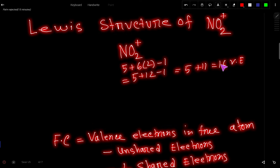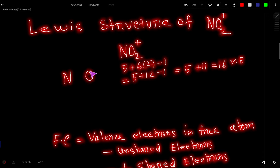These 16 valence electrons have two tasks. The first task is to connect the three atoms together, and the second task is to satisfy the octet for all atoms. The central atom is nitrogen because nitrogen is the least electronegative atom, or has the highest capacity for making bonds. So nitrogen is the central atom and the oxygens are the outer atoms.